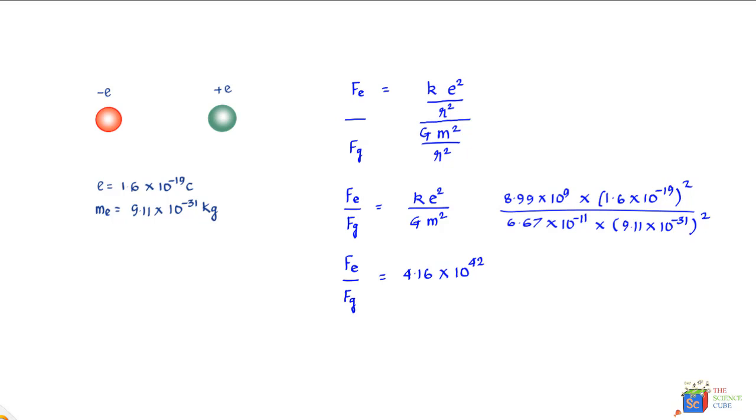You can write this as Fe = 4.16 × 10⁴² × Fg, meaning the electrostatic force is greater than the gravitational force by a factor of 10⁴². You would want to ponder that the magnitude of electrostatic force can be significantly more than that of gravitational force.